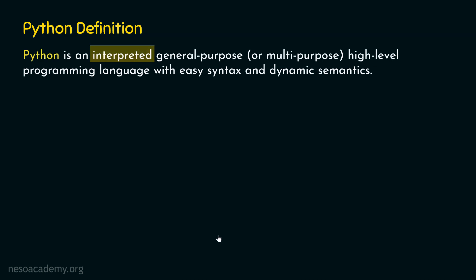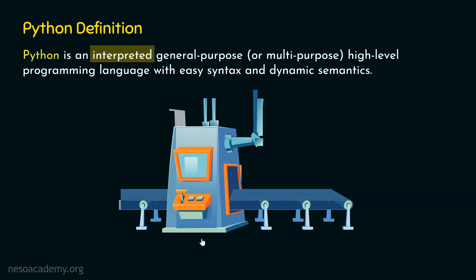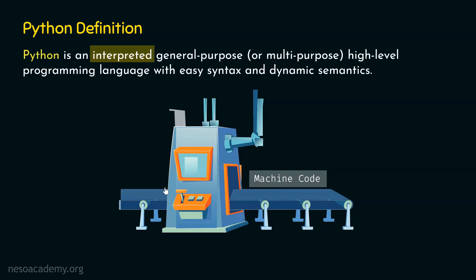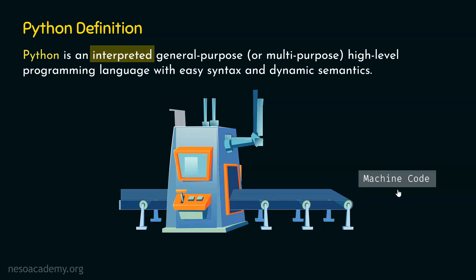You can think of a translator as a device or machine which takes source code — the code which we humans can understand — as input, and in response generates machine code as output. Machine code is the code which machines or computers can understand. So Python is an interpreted programming language, which means that Python uses an interpreter as a translator to translate its code into machine code.